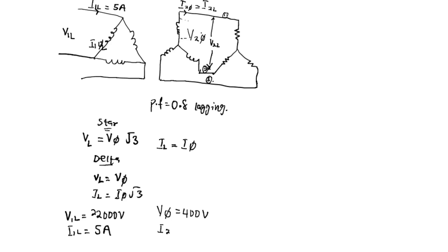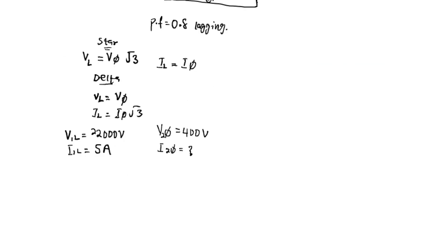The line current of the secondary is not given; we have to find it. The current in the primary, which is the phase current, is the line current of the primary divided by √3, which is 5 amperes divided by √3.